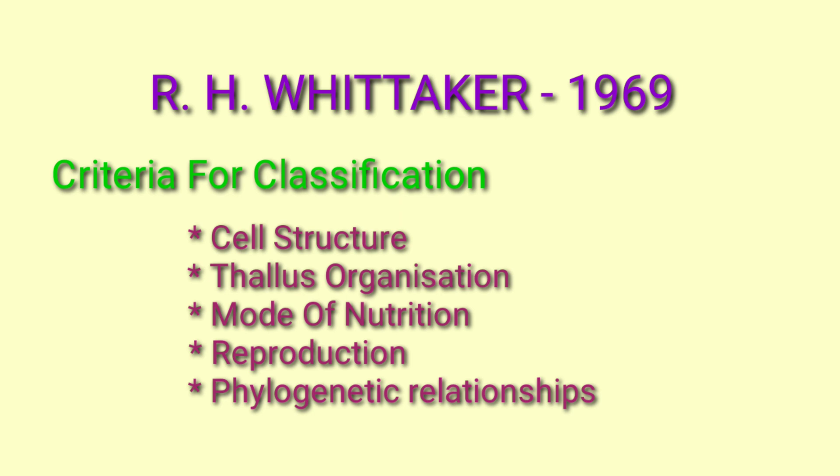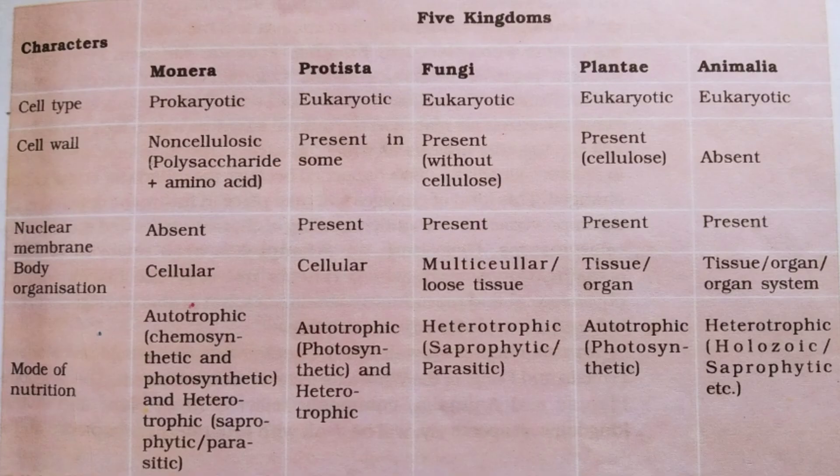To recap, the classification criteria are: cell structure, thallus organization, mode of nutrition, reproduction, and phylogenetic relationships.